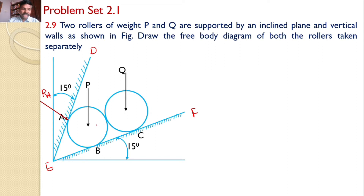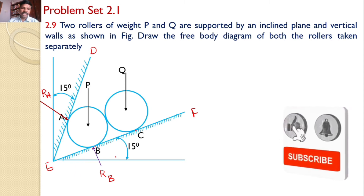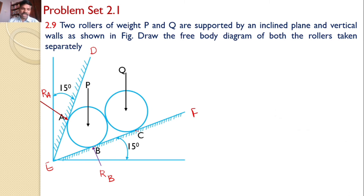Similarly, the roller is supported at B. Hence, the reaction developed at point B is perpendicular to the fixed surface EF, and it is towards the roller P. This is the reaction force Rb. You can also look at roller Q. Roller Q is supported by fixed support EF at point C. Hence, a reaction force develops at C, which is perpendicular to EF, at point C, and it is towards roller Q. The reaction force here is Rc.